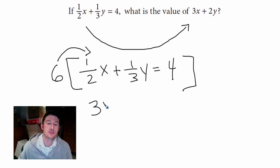Well, 6 times ½ gives us 3, so we get 3x, that's looking good. 6 times ⅓ is 2, so that's how we get the 2y.